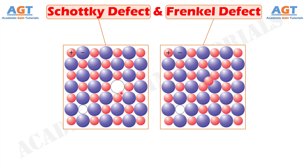Frenkel defect is one type of point defect where an atom, or more precisely an ion, especially a cation, leaves its original lattice site and occupies an interstitial position in the same crystal. Usually this type of defect is observed in ionic solids where the size of the anion is substantially larger than the size of the cation. Although both Schottky defect and Frenkel defect are point defects and occur only in ionic materials, there exists a big margin between them.